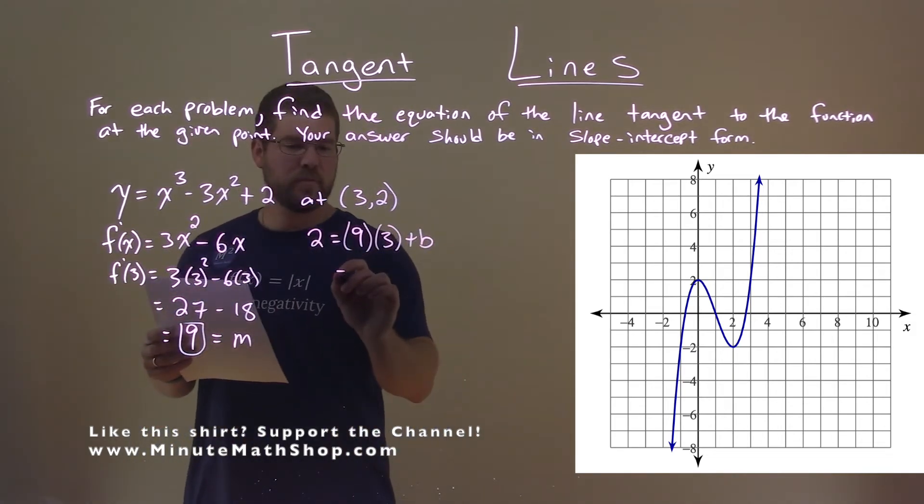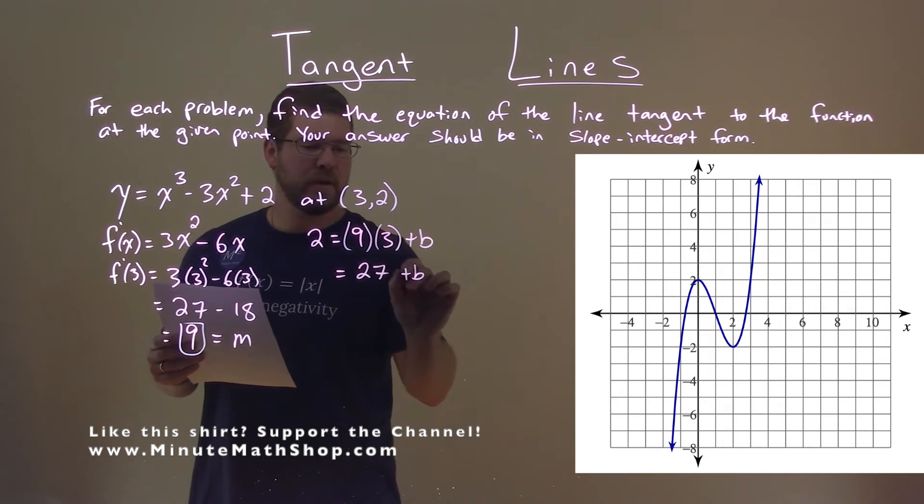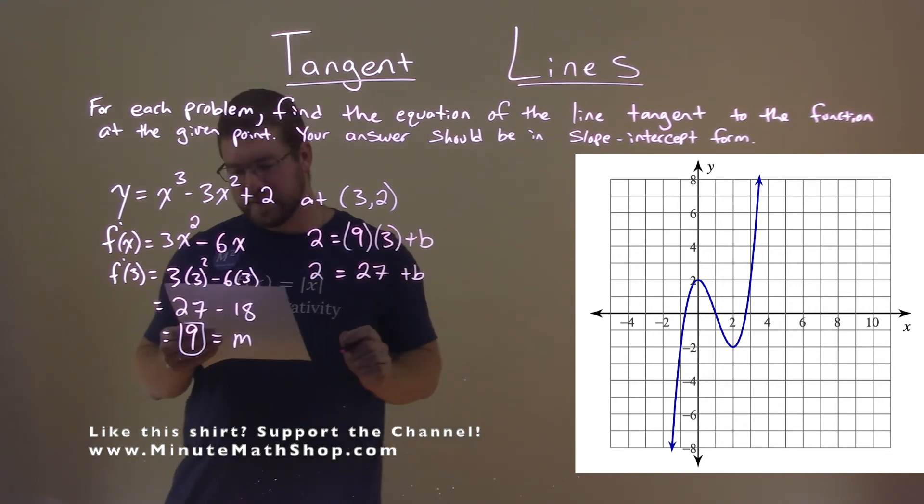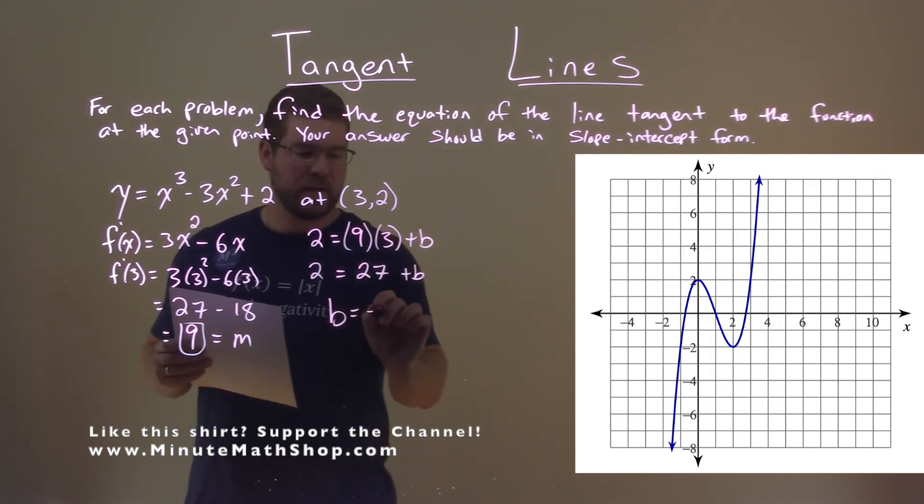9 times 3 gives us 27 plus b equals 2. Subtract 27 on both sides, and b equals negative 25.